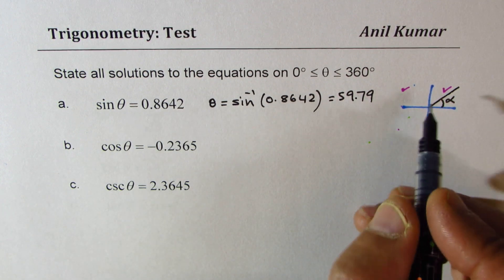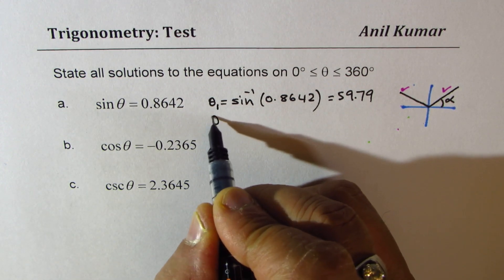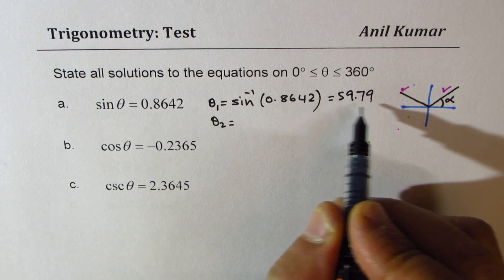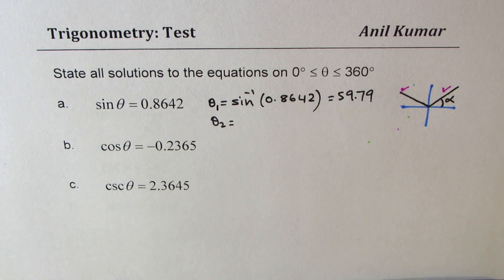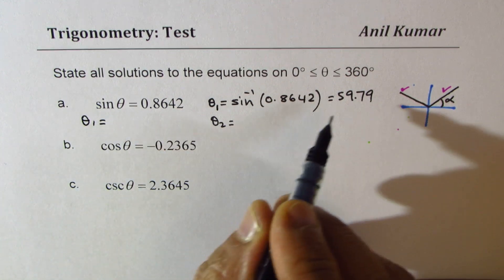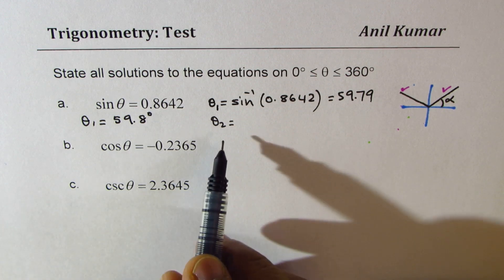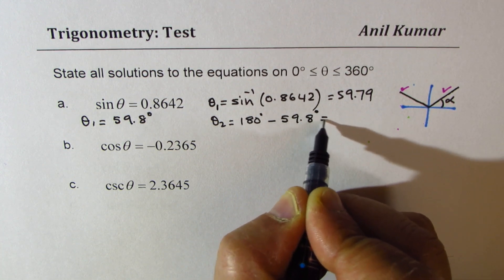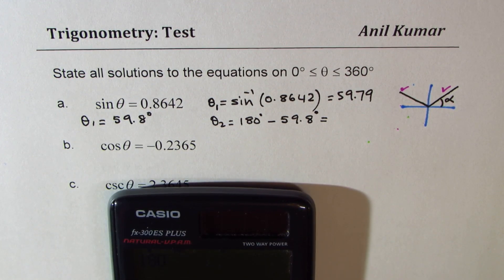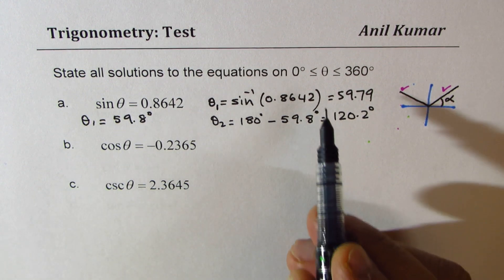Sine theta is also positive in quadrant 2. So the other angle — let's call this theta 1 and theta 2 — theta 2 is going to be 180 degrees minus that. Rounding theta 1 to 1 decimal place: 59.8 degrees. The other angle will be 180 degrees minus 59.8 degrees, which is 120.2 degrees. That is how we get all the solutions in the given domain.